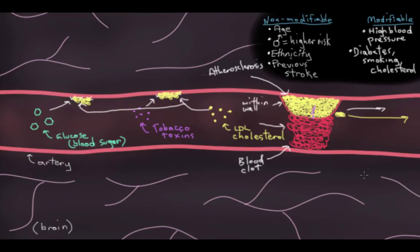So diabetes, smoking, and cholesterol can all work together to increase your risk of having a stroke. And I just want to clarify that they all independently increase your risk of having a stroke, but here I've just shown you them all working together just for simplicity's sake.